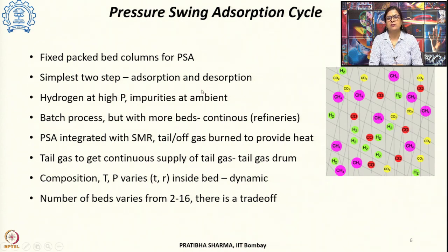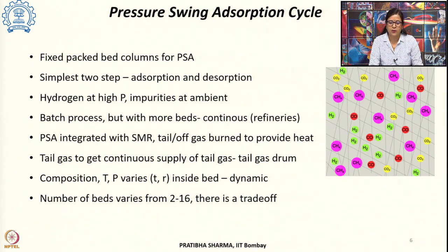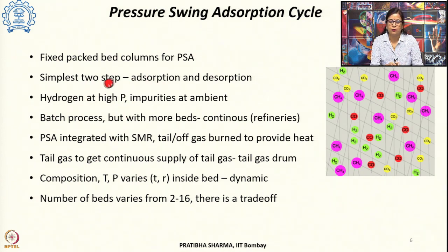For most applications where hydrogen is required — like in refineries or other applications — a continuous requirement of hydrogen exists. In order to make this batch process a continuous process, more beds are added. So it is not just 2 steps; we can add more number of beds so as to make it a continuous process.